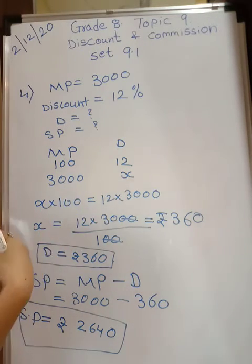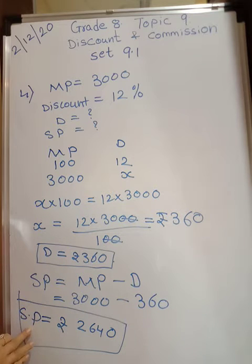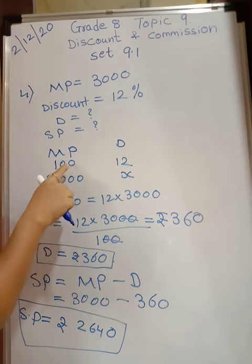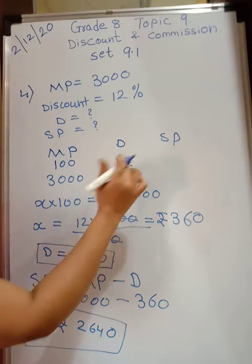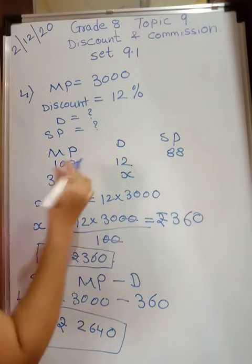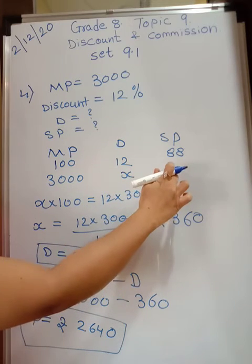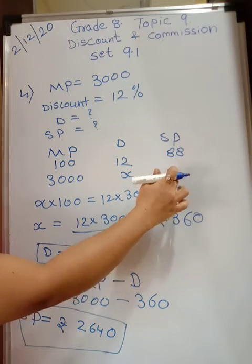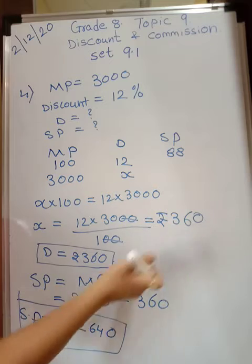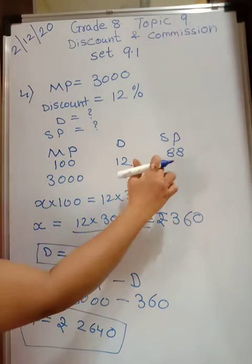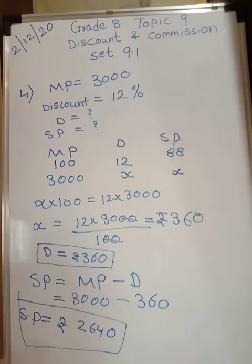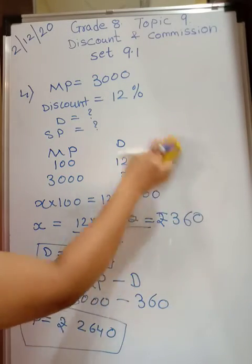We first found the discount because we need to subtract to find selling price. Alternatively, if marked price is 100 and discount is 12, selling price directly is 100 minus 12 equals 88. So if marked price is 3000 you can find selling price directly — both methods give the same answer. The choice is yours; there are many ways to approach it.